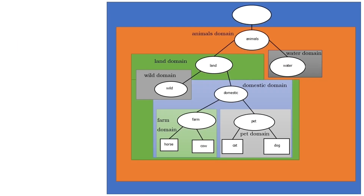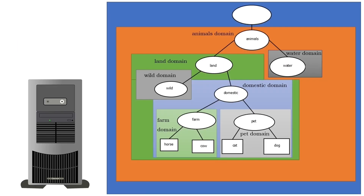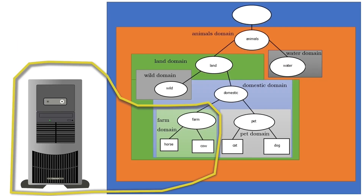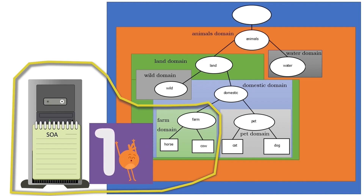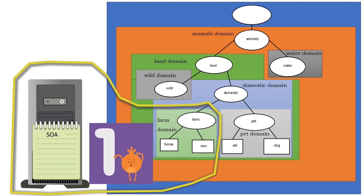The Start of Authority record defines the authoritative name server for the domain and configures its properties and characteristics. Since each domain needs a unique zone file, we cannot add more than one Start of Authority record in a zone file — we can add only one.